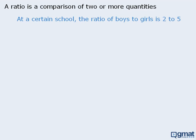For example, we might say that at a certain school, the ratio of boys to girls is two to five. Here we are comparing the number of boys to the number of girls.